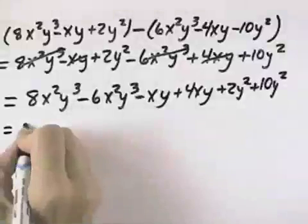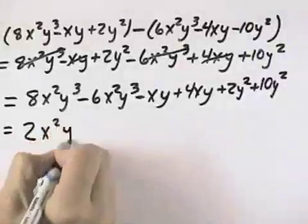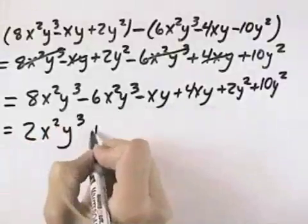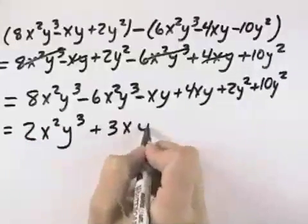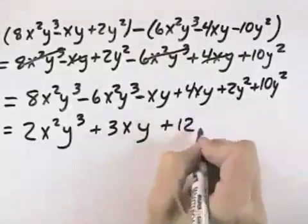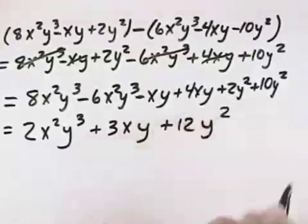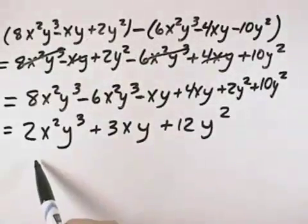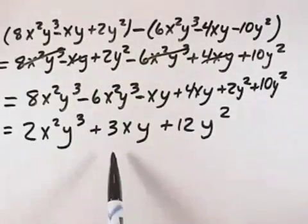8 minus 6 is 2x²y³. Then minus 1 plus 4 is plus 3xy, and finally plus 2 plus 10 is plus 12y². So our result when we do the subtraction to combine these two polynomials is 2x²y³ plus 3xy plus 12y².